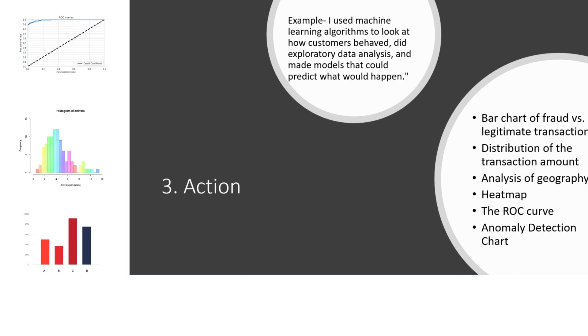Lastly, a ROC graph shows how well a machine learning model works. They generally highlight the trade-off between true positives, false positives, accuracy, and recall.